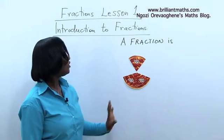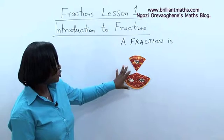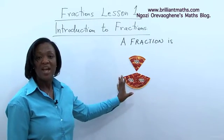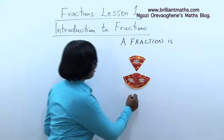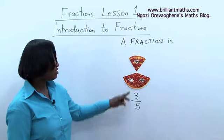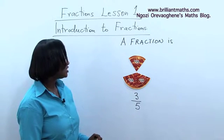The pizza was cut into five places and as you can see, two parts have been taken away. What we have left now are three parts out of five. Remember, three is the numerator and five is the denominator.